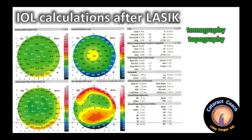A useful metric to keep in mind is that the average laser removes about 15 to 20 microns of tissue per diopter of myopia. So by looking at this picture — if the normal unablated periphery is in the 570–590 micron range, and the center is about 500 microns — that suggests roughly 3 diopters of tissue removed, or about 50 microns. The SIM K values on the right side of the page show where the steep and flat meridians are and the amount of astigmatism.